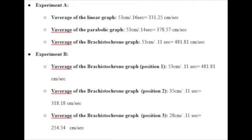Finally, for us to compare the different velocities among the different graphs, we used the formula distance over time equals velocity. Thanks to this, we found out that the velocity of the Brachistochrone was the biggest, with 481 centimeters per second.